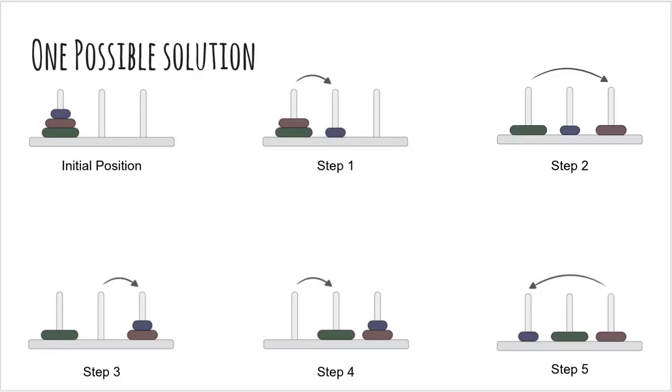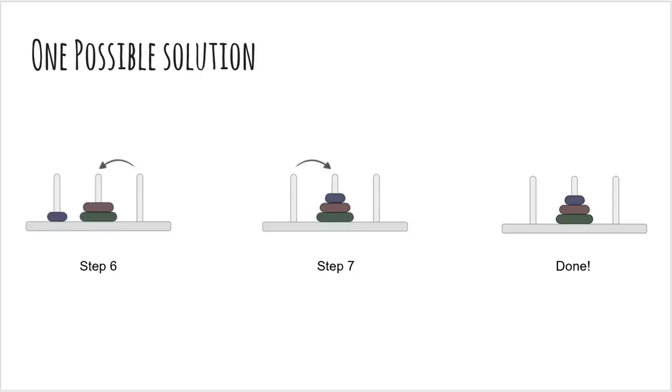In the fourth step, we move the largest disk to the destination tower. In the fifth step, we move back the small disk to the source tower. In the sixth step, we move the middle disk onto the destination tower. And finally, we move back the smallest disk onto the destination tower.